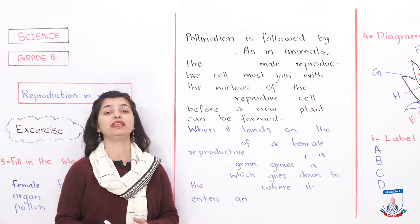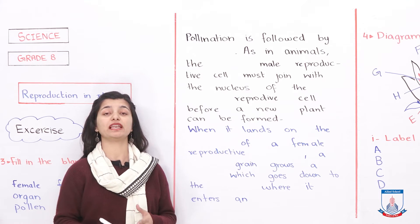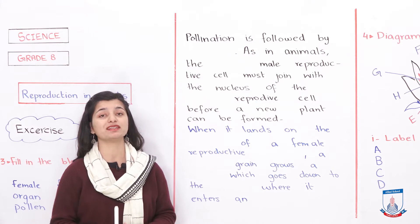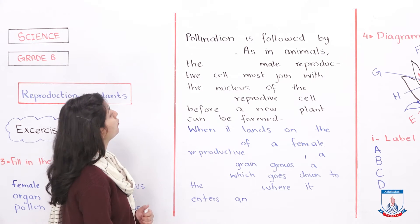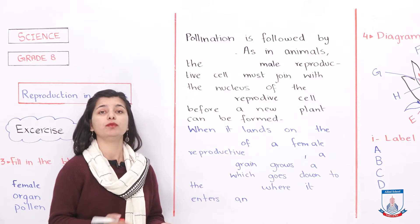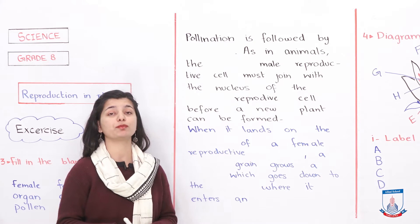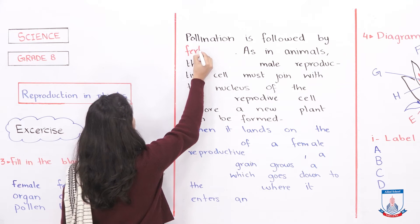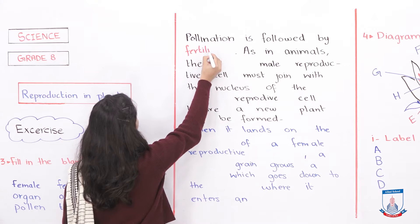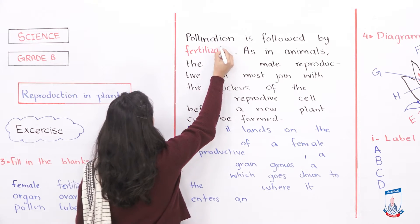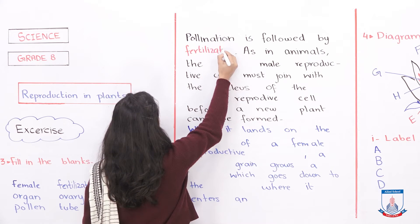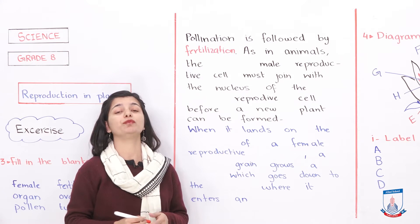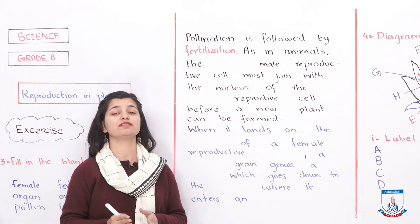We will begin by reading the passage, which is based on fertilization. What is the process after pollination? In your word bank, there is only 'fertilization' that will suit it. So the first blank is: pollination is followed by fertilization.